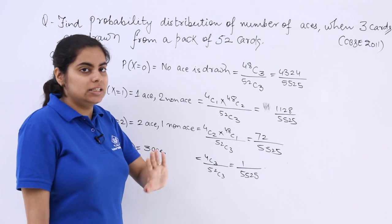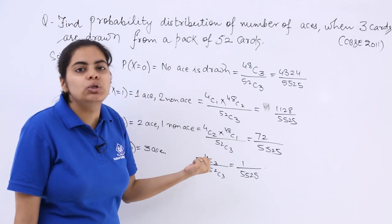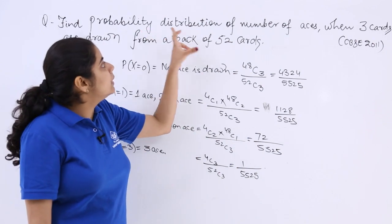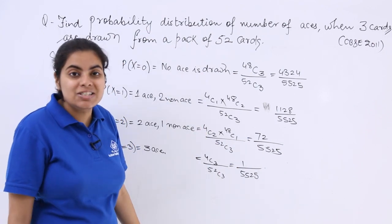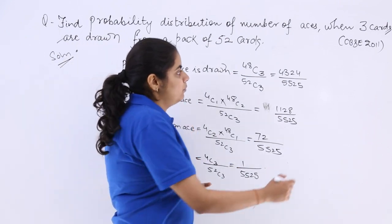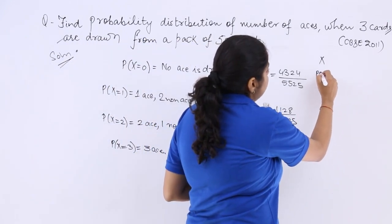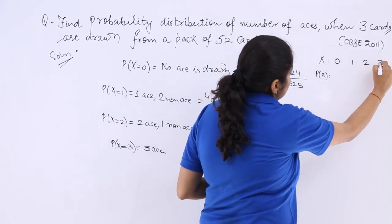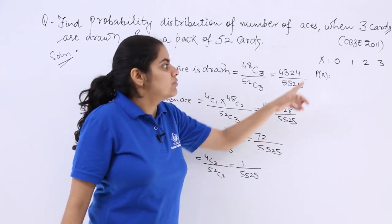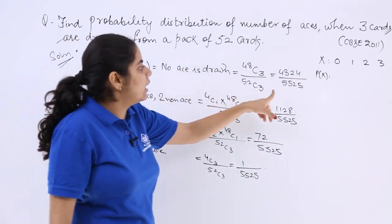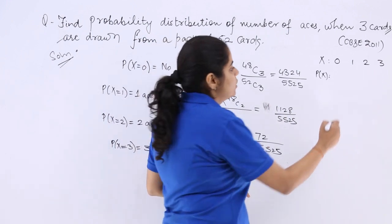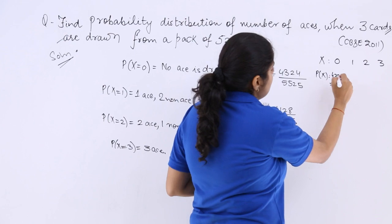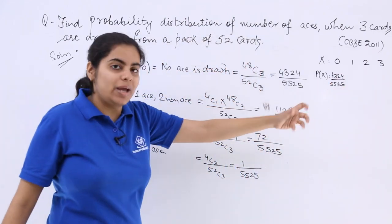Now if you leave your answer here after all the solution, this will not give you all of the marks because you have to leave it in the probability distribution form. So what will be the probability distribution format? It will be simply: you write here X, you write here P of X, you write here 0, 1, 2, 3. And in the P of X, when P of 0, you were supposed to find out this was 4324 over 5525. You can give it as X equals Xi format also.